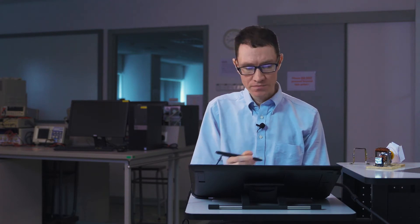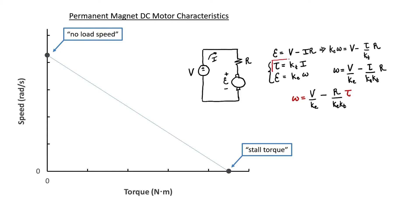What I want to do now is see the relationship between speed and current. It's not very hard to convert torque to current because in a permanent magnet motor they're proportional by the torque constant. If I substitute in for the torque, I also obtain a linear relationship between speed and current. But this is only true for a permanent magnet DC motor.